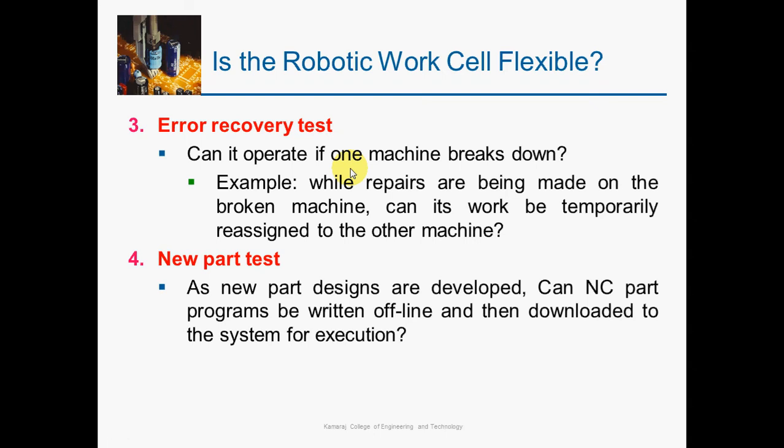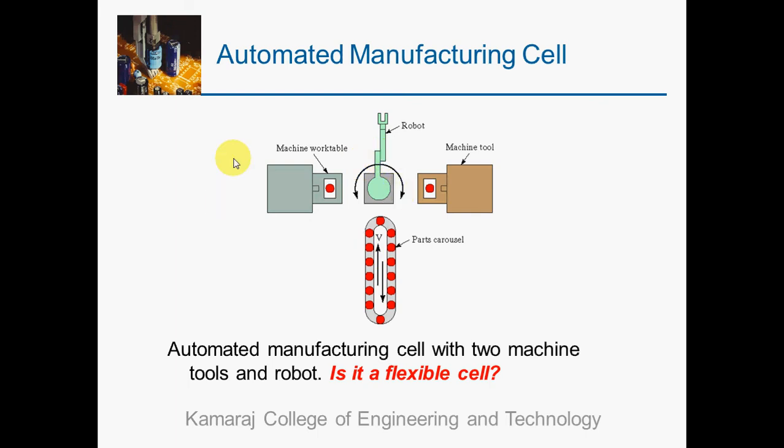For error recovery: since we have two CNC machines, if one machine breaks down the other can keep production running continuously. For the new part test, to introduce new part configurations we need to upload different NC part programs, which can be done with the two CNC machines in this robotic cell. All four tests are satisfied, so we can say this automated robotic manufacturing cell is flexible.